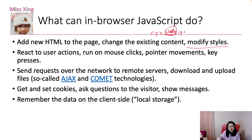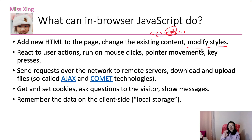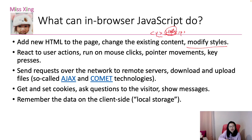JavaScript can react to user actions: when you click a button, like a sign-up button, you can run validations. It can run on mouse clicks, pointer movements, and keypresses. Suppose when you hover on the navigation you want to show sub-links — you can do that. For keypresses, similar to Google Search, when you type a letter, suggestions appear below — you can do that using a keypress event. JavaScript can also send HTTP requests over the network to remote servers — server-side applications like Spring Boot or Node.js Express — and download or upload files.